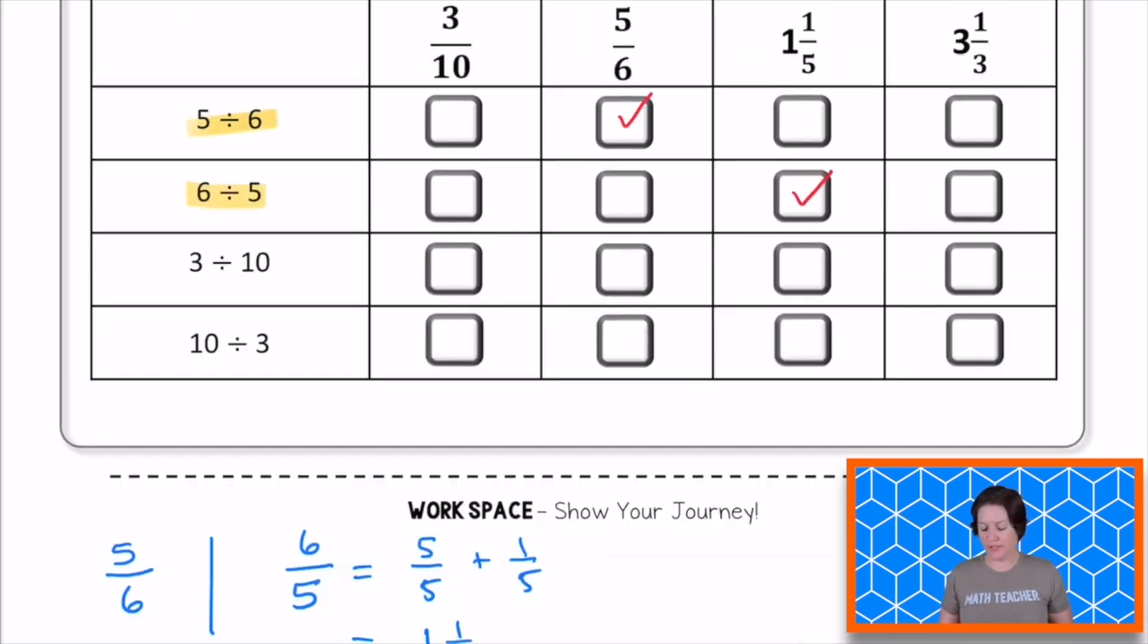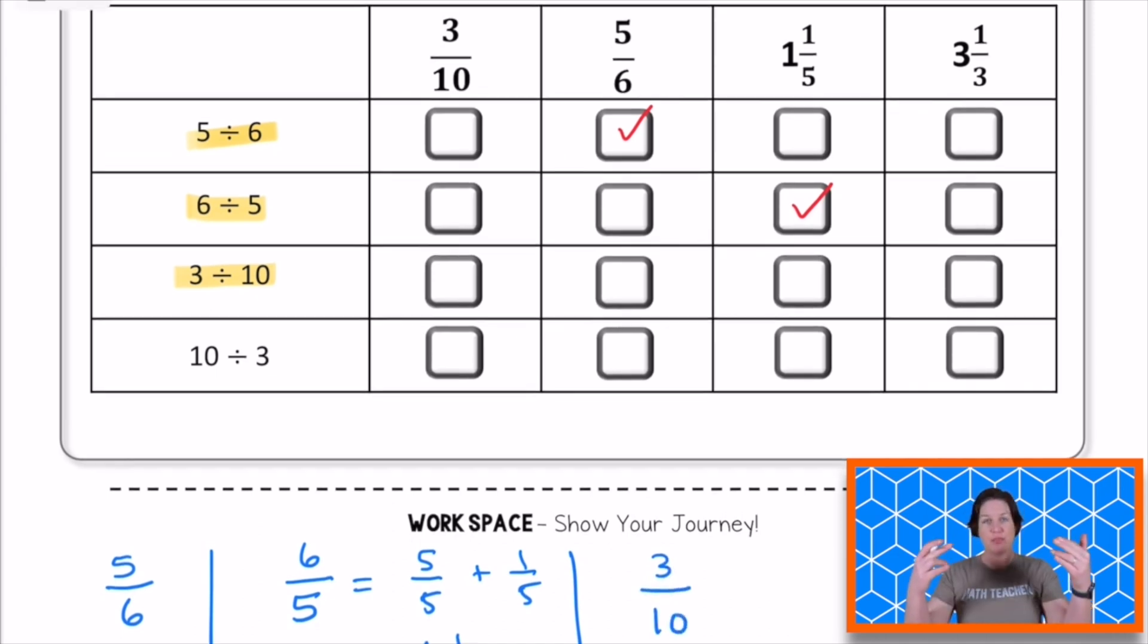Let's move on to the expression of 3 divided by 10. We can rewrite that as a fraction. 3 divided by 10 is the same thing as 3 tenths. Do you see that as a fraction? Yeah, I do too, the very first one. So let's go ahead and mark that.